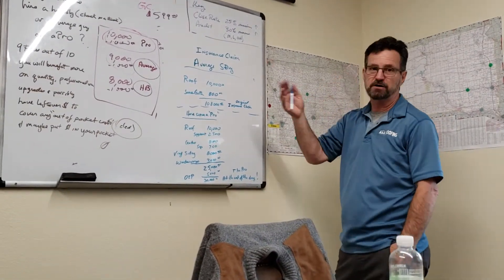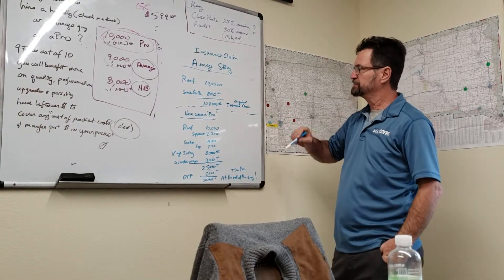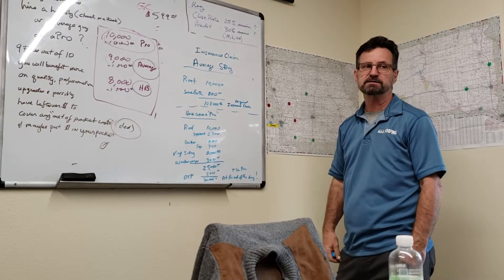The insurance company comes out, you've turned in a claim, they send an adjuster out. The adjuster comes out and goes, you know, you need a new roof, it's going to be about $10,000. And guess what? There's a little bit of gutter damage, $800.